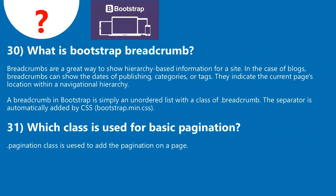Question 30: What is Bootstrap breadcrumb? Breadcrumbs are a great way to show hierarchy-based information for a site. In the case of blogs, breadcrumbs can show the dates of publishing, categories, or tags. They indicate the current page's location within a navigational hierarchy. A breadcrumb in Bootstrap is simply an unordered list with a class of .breadcrumb. The separator is automatically added by CSS in min.css.